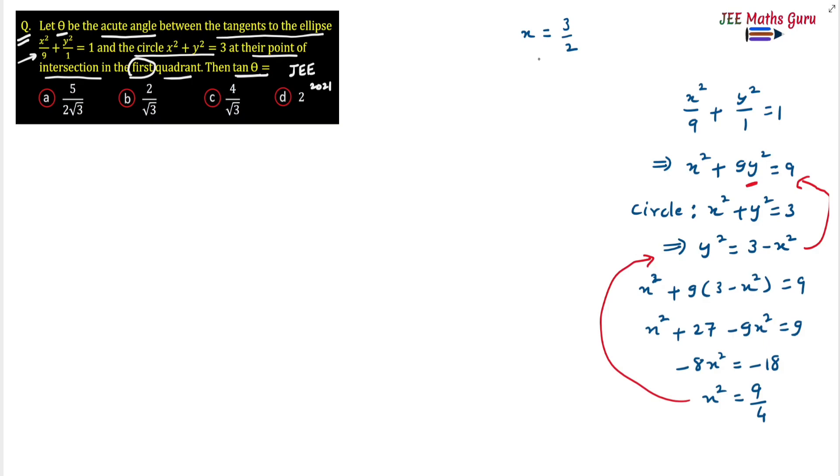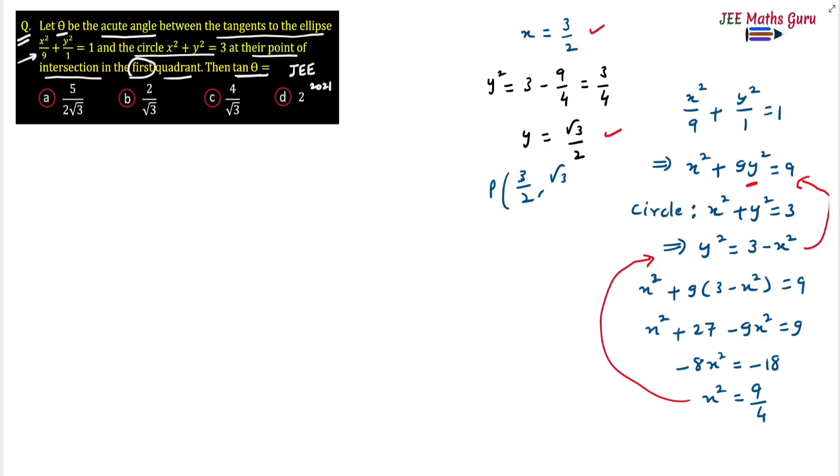Since the point of intersection is in the first quadrant, x = +3/2. Putting x² = 9/4 into the equation of the circle: y² = 3 - 9/4 = 3/4, and since the point is in the first quadrant, y = √3/2. So the point of intersection P has coordinates (3/2, √3/2).